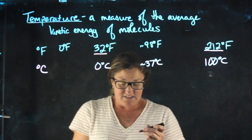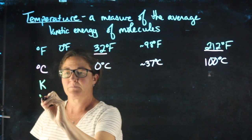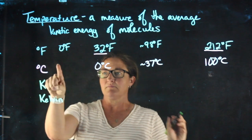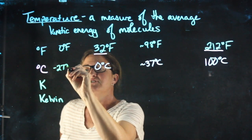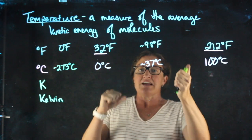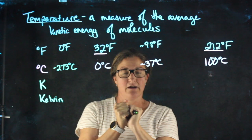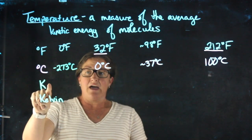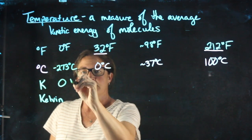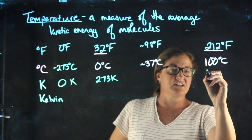So we use a third scale a lot in science, which is known as the Kelvin scale — it's not degrees Kelvin, just Kelvin. The coldest possible temperature on the Celsius scale is negative 273 degrees Celsius. That is known as absolute zero — the point where if we cool something down further and further, molecular motion stops entirely. When we use the Kelvin scale, we set the lowest possible temperature to be zero Kelvin. Zero degrees Celsius is 273 Kelvin, and 100 degrees Celsius is 373 Kelvin.